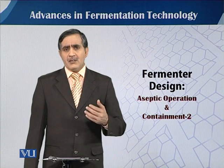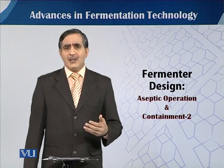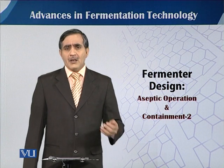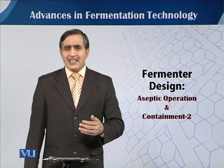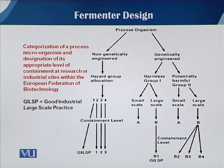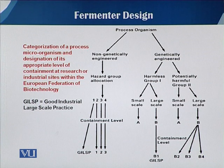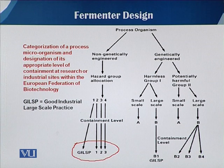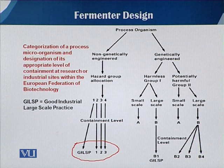First, when we assess the level of risk, we have to assign a category to that organism. There are four different categories of containment level: GILSP (level 0), level 1, level 2, and level 3, making a total of four risk levels.